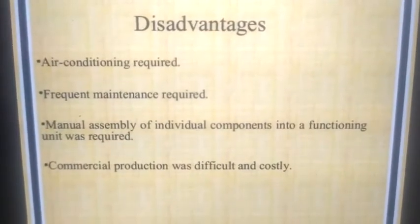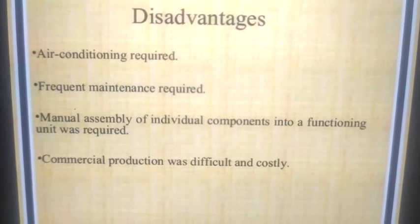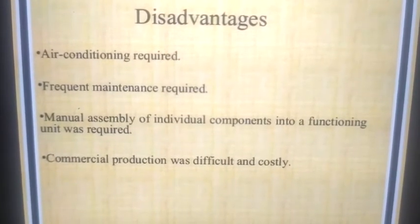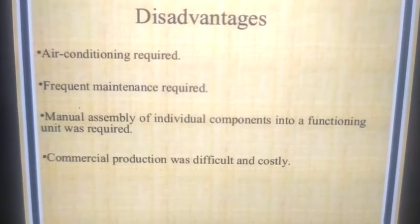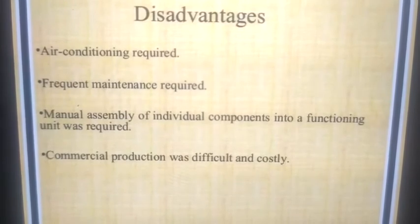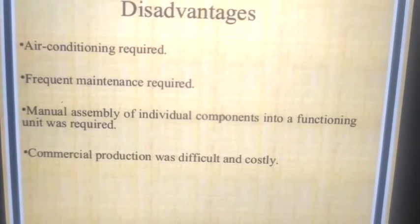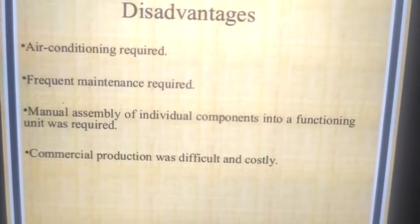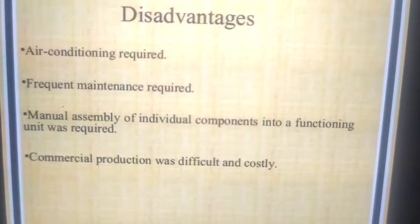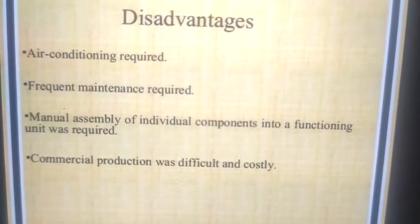Now look at some disadvantages of the second generation computer. First, air conditioning was required; second, frequent maintenance was required; third, manual assembly of individual components into a functioning unit was required; and fourth, commercial production was difficult and costly.